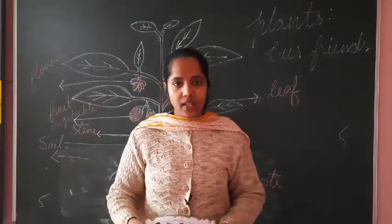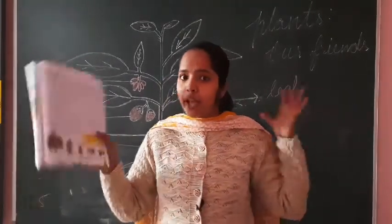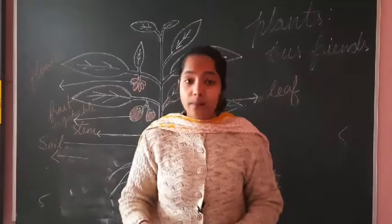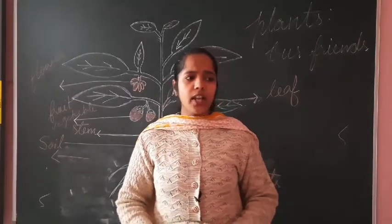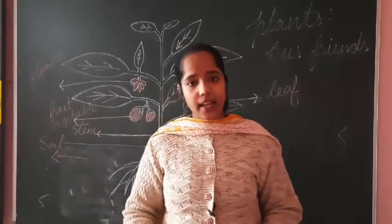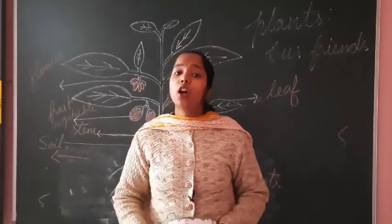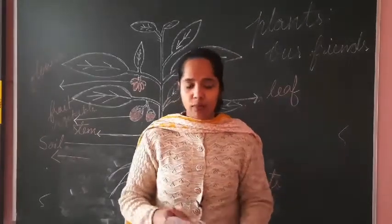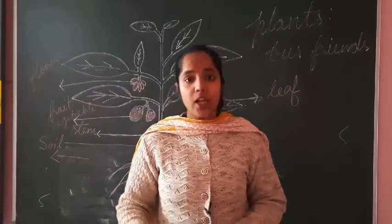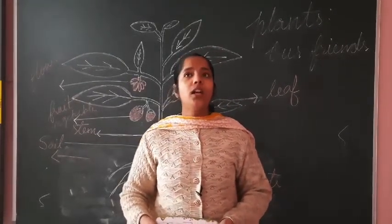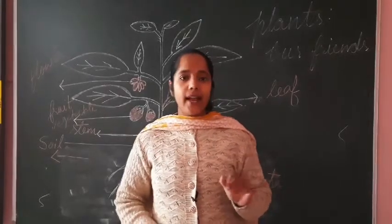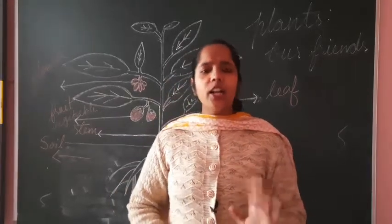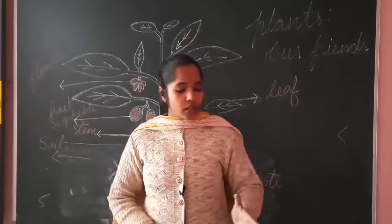Have you seen trees? Mango tree, banyan tree, neem tree — they are very big, tall, woody, and hardy. Shrubs — have you seen shrubs? Shrubs are like rose plants or lemon plants. Have you seen herbs? Herbs like coriander and mint — mint means pudina — very short plants, you can eat them too. Climbers need the support of a wall, like money plant. And creepers like watermelon plants, pumpkin plants, and bottle gourd — they do not need any support; they just spread along the ground.